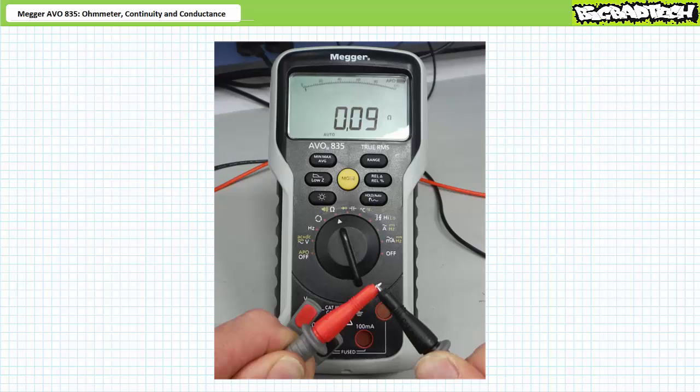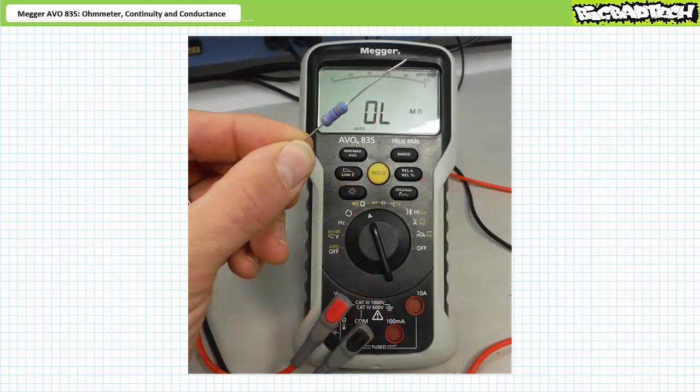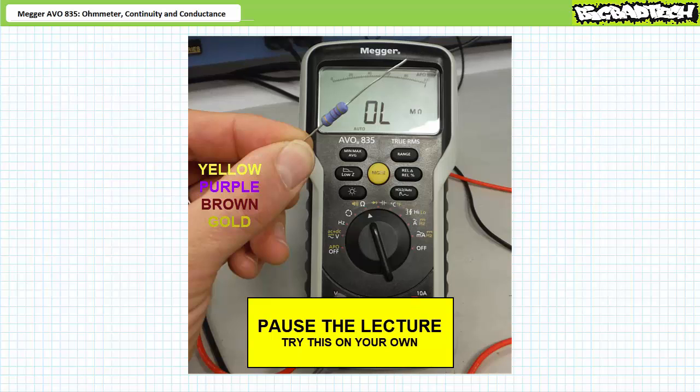Now that we're certain we've got a functional set of probes, let's test the resistance of some electrical components. Again, the element under test must be depowered and isolated from the system. Consider a resistor exhibiting the following four-band color code: yellow, purple, brown, gold. See if you can use your understanding of the four-band resistor color code to determine the nominal or nameplate resistance value for this resistor. By all means, pause the lecture and try this on your own.